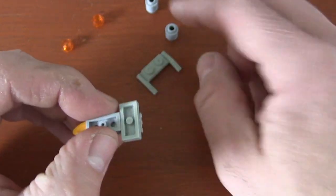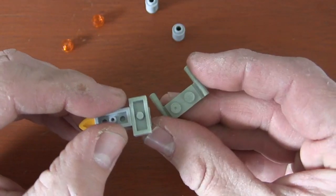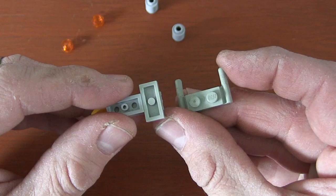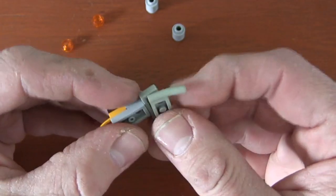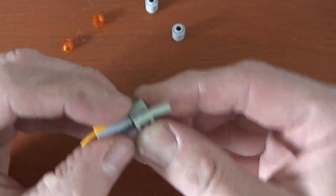Now underneath that jumper plate I just put on, I'm gonna get a 1x2 plate with handles on the side and put it so those handles are facing back towards the rear of the Y-Wing fighter. Just put it right on the jumper plate like that.